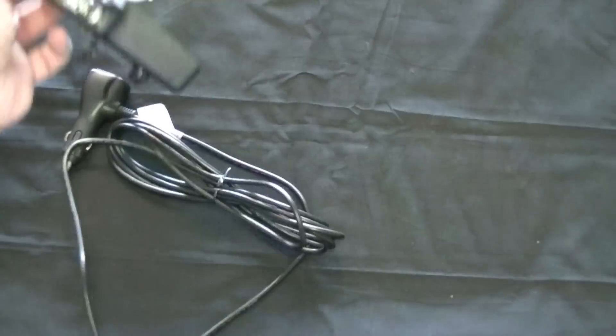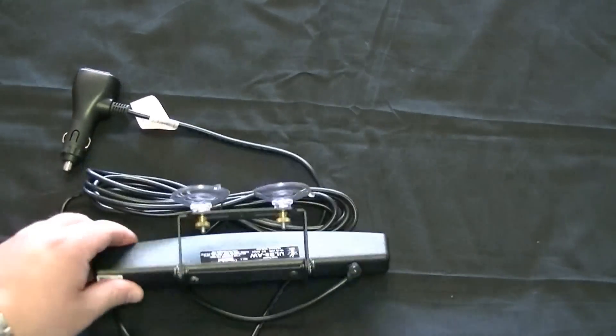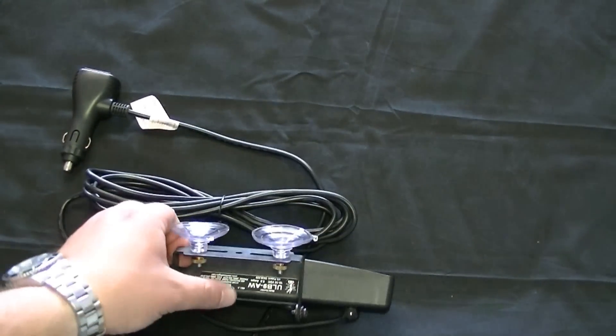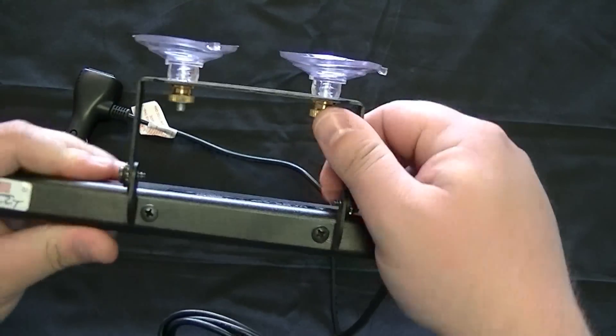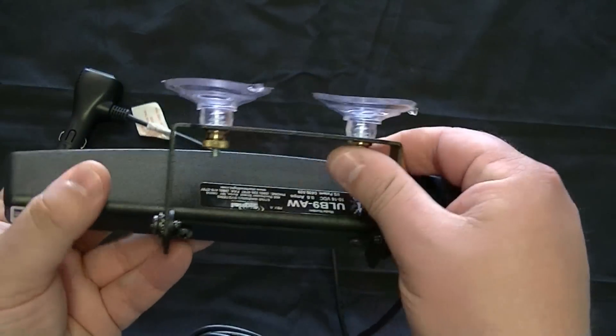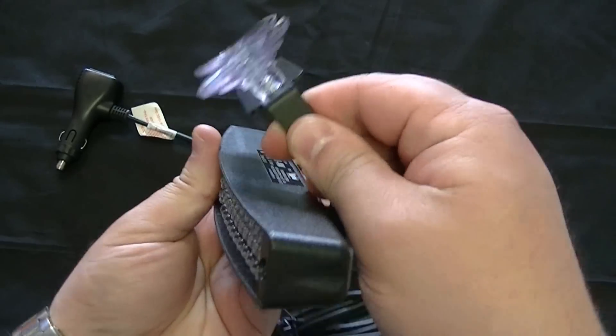A couple different mounting options for it. Obviously, this one we have the suction cups mounted on it. This bracket is adjustable. So, you can do a couple different things. Obviously, you would just angle the bracket with the slope of your windshield.